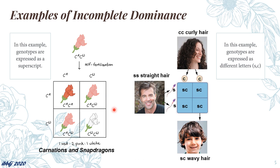Here are some examples of incomplete dominance. To the left, we have a Punnett square for carnations and snapdragons, which are kinds of ornamental flowers. You can also see here that alleles are written differently — they are written as superscripts, and these alleles are also represented by different letters: R for red phenotype, W for white phenotype, and RW for pink phenotype. This still shows a homozygous allele combination having similar superscripts, and heterozygous allele combination having different superscripts.